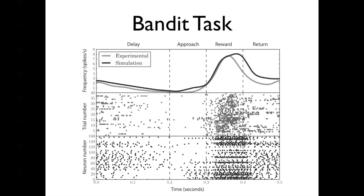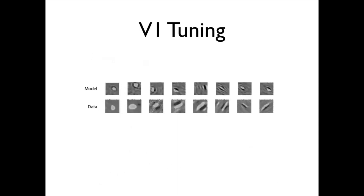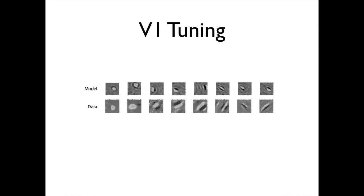In a similar vein, we can take spikes from Spaun or spikes from a macaque monkey and try to figure out the tuning of the neurons. Looking at V1 in the model versus V1 in a macaque, analyzing spikes in exactly the same way, we see very similar patterns: oriented patterns, center-surround effects, two bars instead of three, and so on. The interesting thing is that neural data analysis that's very commonly done is very natural to do with a model like this because all your data is spiking.